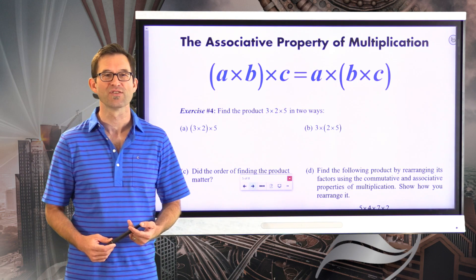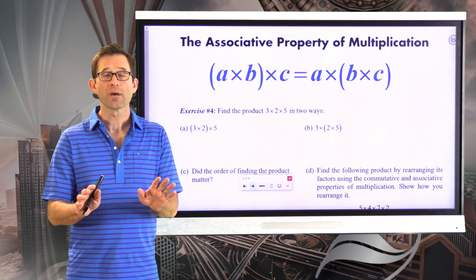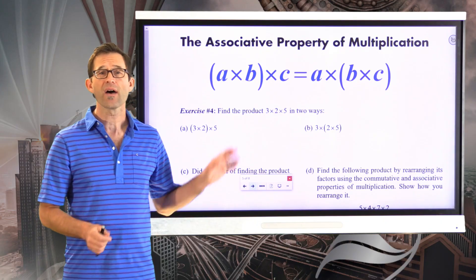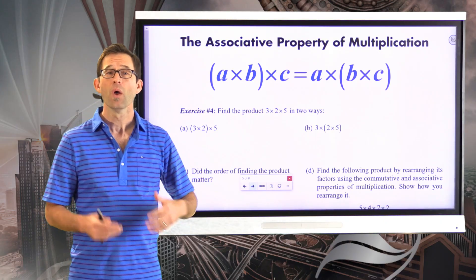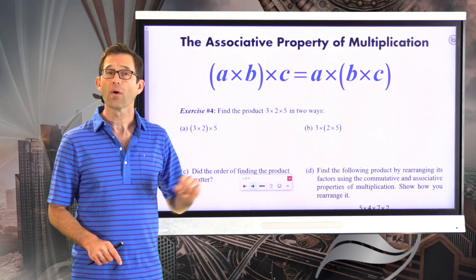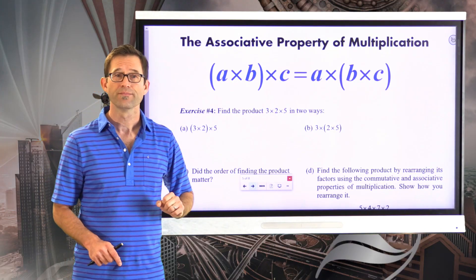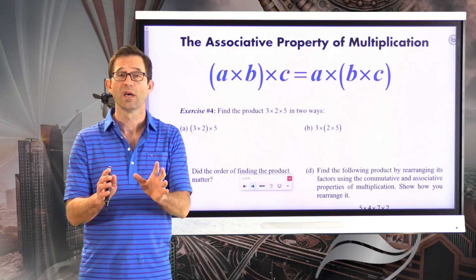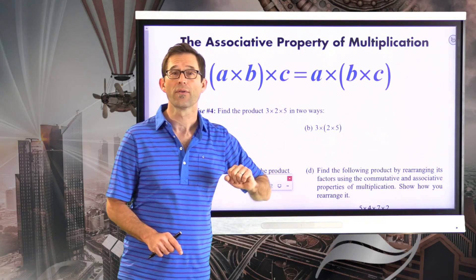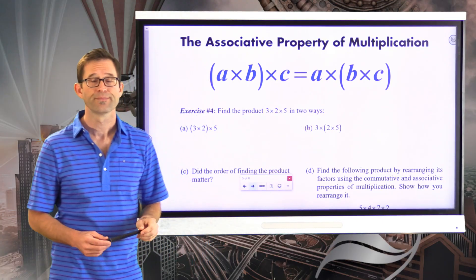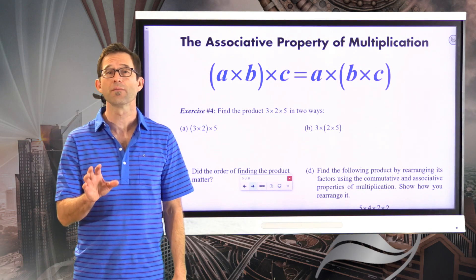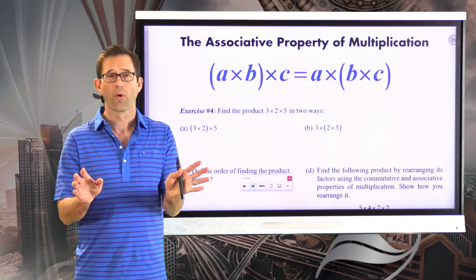Let's look at another extremely important property of multiplication: the associative property. This applies when we're multiplying three or more numbers together. If I have a times b times c, I can multiply a and b together first and then multiply by c, or I can first multiply b and c together and then multiply by a. Exercise number four illustrates the associative property of multiplication.